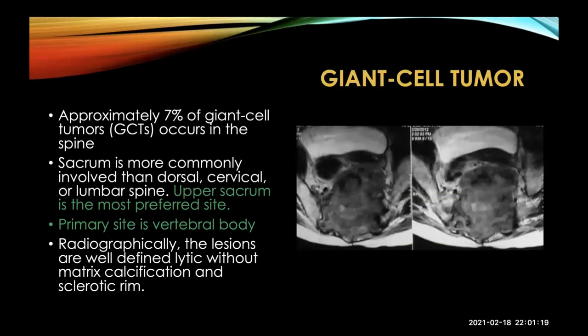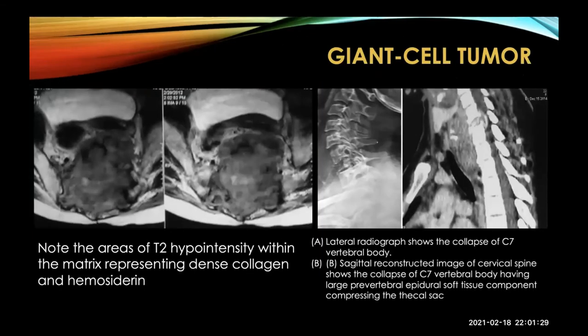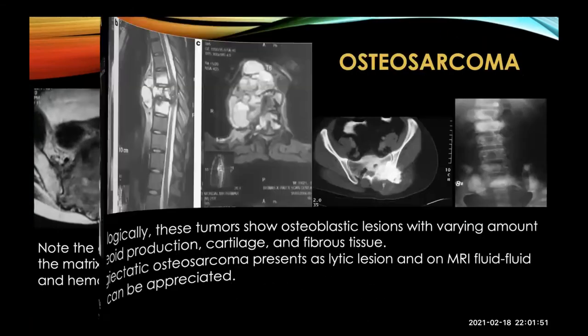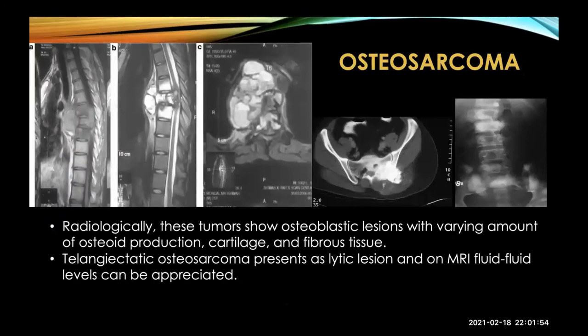Giant cell tumor is very common, with the primary site being the vertebral body and upper sacrum. These lesions are well-defined lytic without matrix calcification or sclerotic rim. You can appreciate areas of hypointensity inside the tumor, with dense collagen and hemosiderin content. Vertebral body collapse can occur — for example, C7 collapse with compression of the thecal sac is visible on imaging.